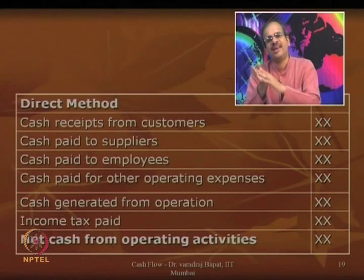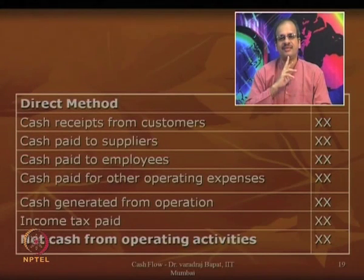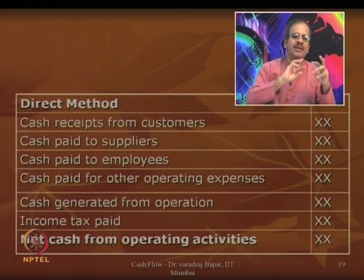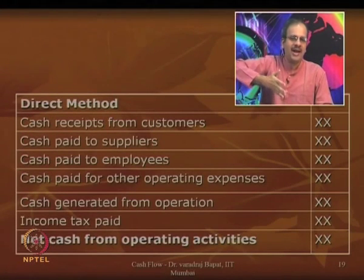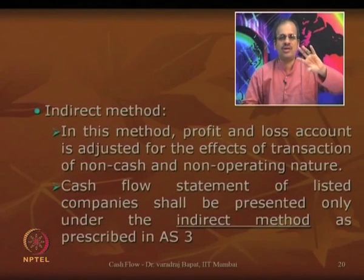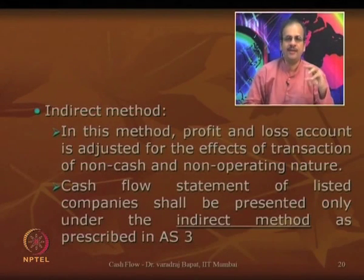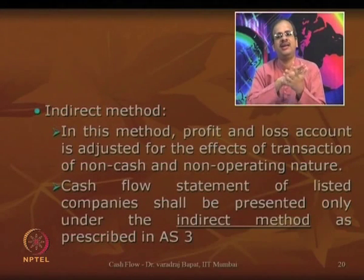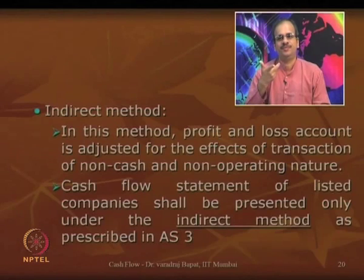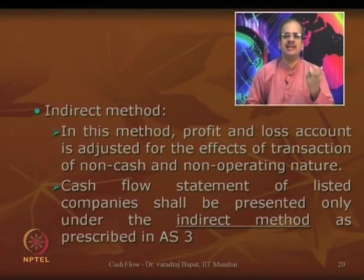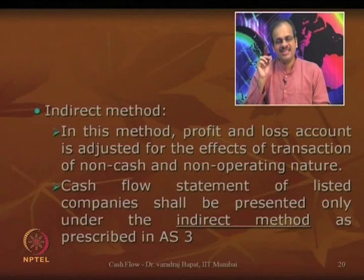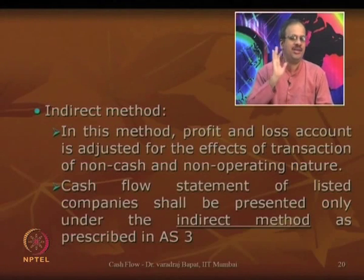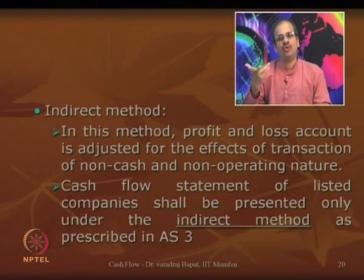AS 3 or IAS 7 recommend use of the indirect method. That is why most entities prefer the indirect method. Now, can you imagine what adjustments will be made from P&L to cash flow? Just think of which items need to be adjusted. If you visualize a P&L account and see all the items, imagine whether they will also appear in the cash flows. If something is not there, we need to adjust.